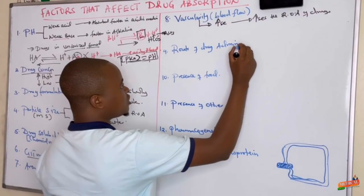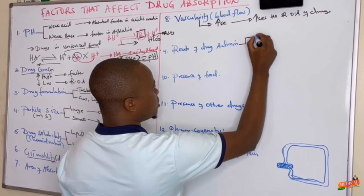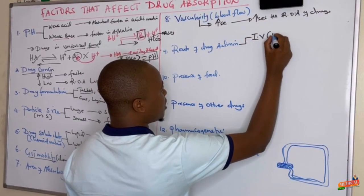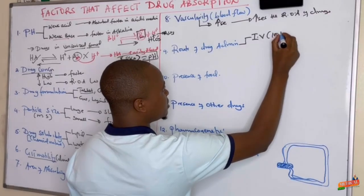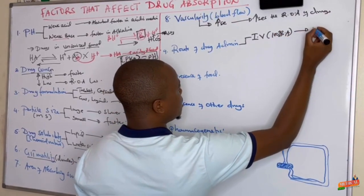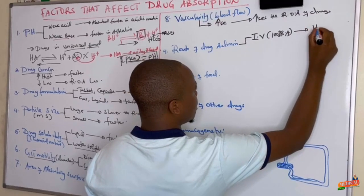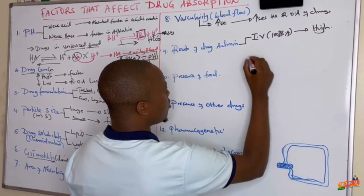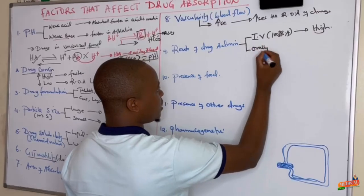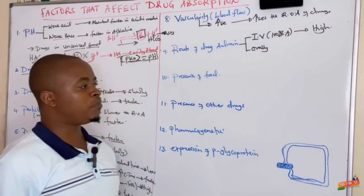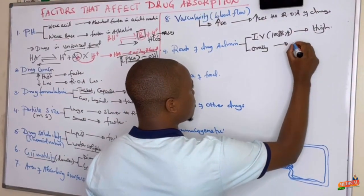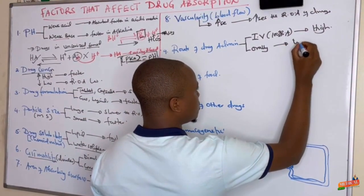The route of administration also matters. Drugs given intravenously have 100% bioavailability, so the rate of absorption is high. Compared to drugs given orally, where they first undergo first-pass metabolism and the rate of absorption is lower.